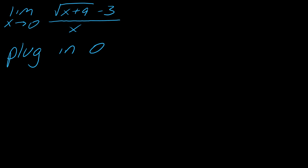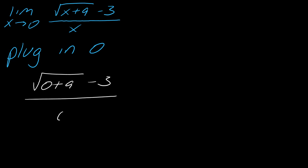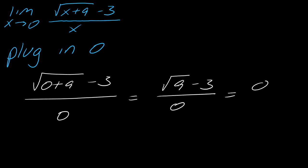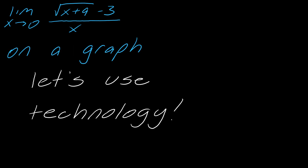To walk you through this — you've got a problem that looks like this. Let's see what happens when we plug in 0. I get the square root of 9 minus 3 over 0, which gives 0 over 0. This is a hint that I should think about tricks, and this is where the conjugate comes in. Once again, I want to point out what this might look like graphically, so let's take a second to look at the graph.